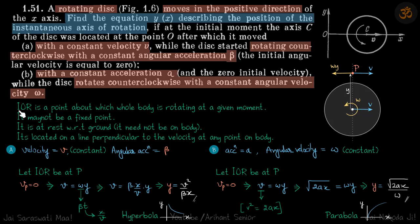This question is about finding the coordinates of the instantaneous axis of rotation. Let's recall a few pointers you must already be familiar with. First, it's a point about which the whole body rotates at a given moment. That means it may not be a fixed point — with time it can change, but at a given moment we can define an IOR.